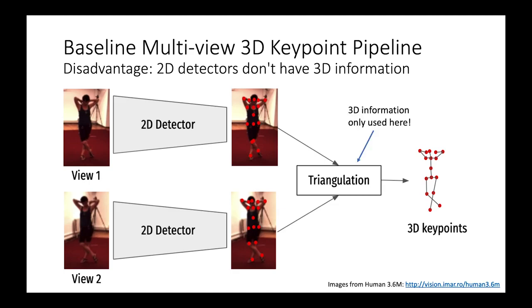The disadvantage is 2D detectors don't have any access to 3D information, since 3D information is only used in the triangulation stage.